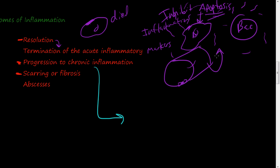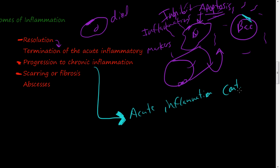If the bacteria sticks around for a long time and the body cannot fight it off, it will promote chronic inflammation. In the next videos we'll discuss what chronic inflammation is and how it differs from acute inflammation. Essentially, the acute inflammation process just continues on and on. In the case of autoimmune diseases — like rheumatoid arthritis, SLE, and other autoimmune diseases — chronic inflammation simply persists.